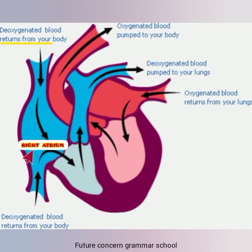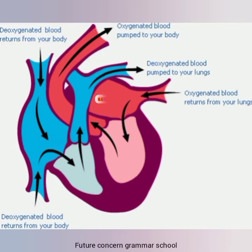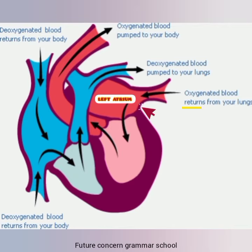The deoxygenated blood from the body enters the right atrium. Jisum say deoxygenated blood — mطلb وہ khun jis mein oxygen kam maqdar mein hoti hai — dain atrium mein dakhil hota hai. Aur oxygenated blood — mطلb وہ khun jis mein oxygen zyada maqdar mein hoti hai — phenphron say left atrium mein dakhil hota hai.